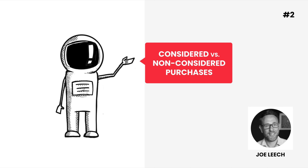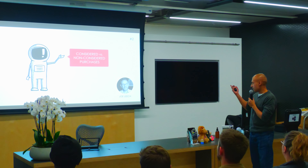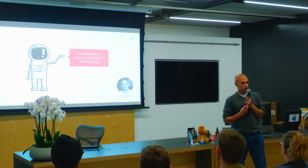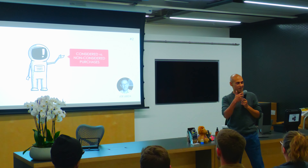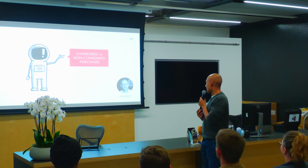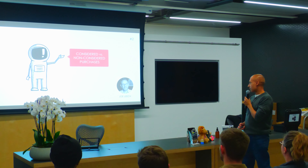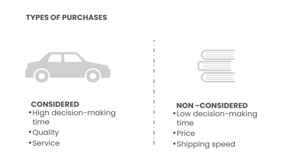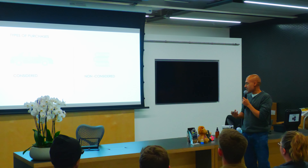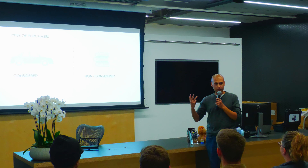The next thing is considered versus non-considered purchases. I learned this one from Joe Leach, a good friend of mine. Basically it says that when you're buying something — for example a car versus books — they're two very different products.